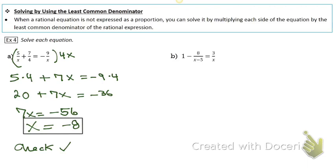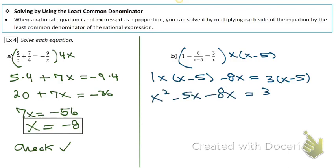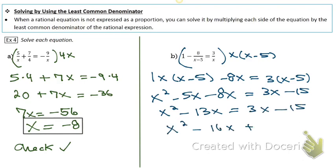In the next one, the common denominator is x times (x minus 5). In the first fraction with just the 1, nothing cancels; in the second fraction the (x minus 5) cancels; and in the third fraction the x cancels. Then you do some distributing, and it's going to be a quadratic, so you clean it all up and set it equal to zero.